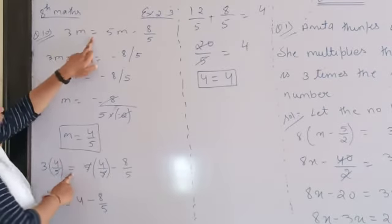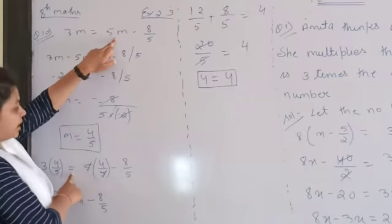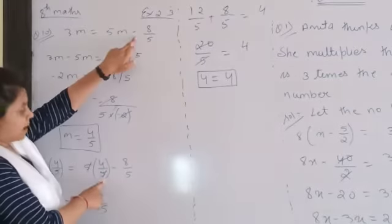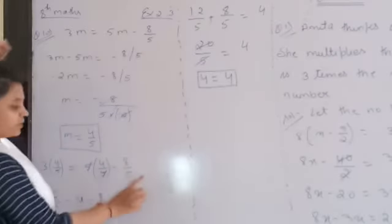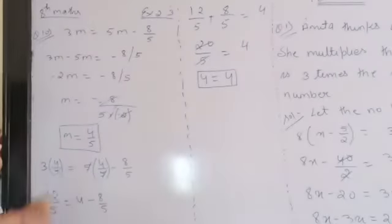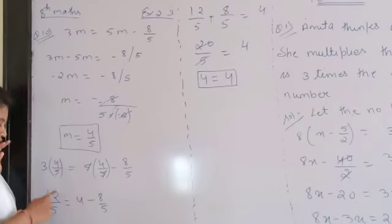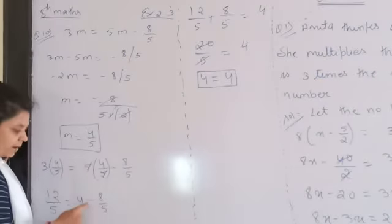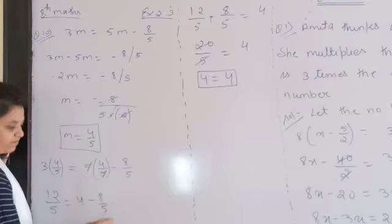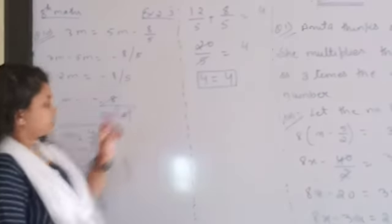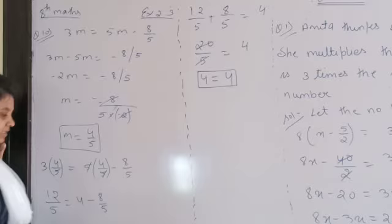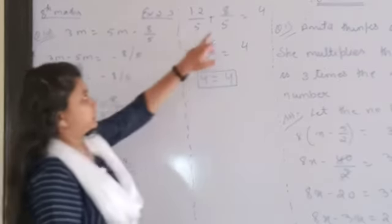1 is equal to 2. For 5 and 5, we have to check 4 by 5. Minus minus 8 by 5 is 8 by 5. For this problem, 4 minus 8 by 5 — 3 for 5 is equal to 5 by 5.